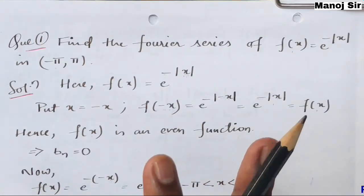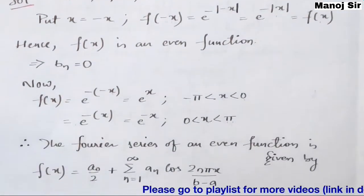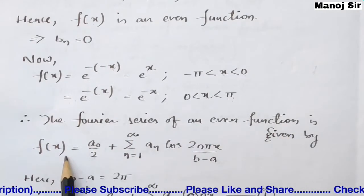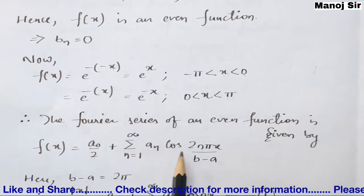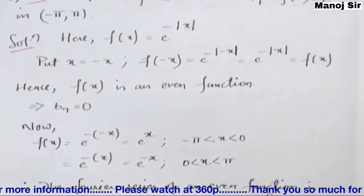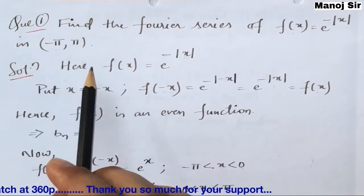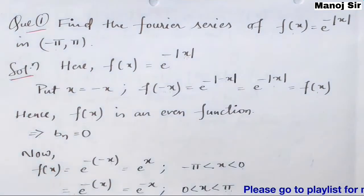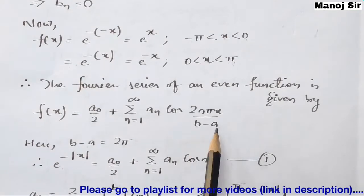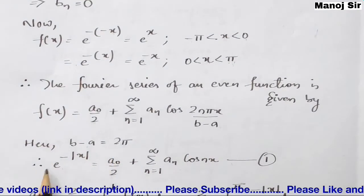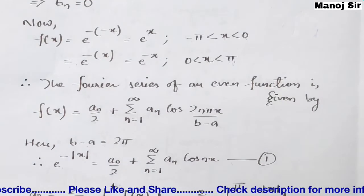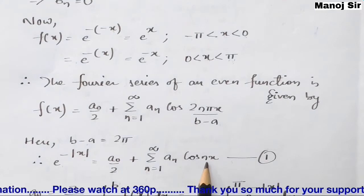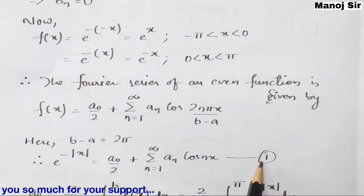It means we need to find only two values: a₀ and aₙ, because both are contained in the Fourier series. The Fourier series of an even function is f(x) = a₀/2 + Σ(n=1 to ∞) aₙ cos(2nπx / (b−a)). Here b−a = π − (−π) = 2π. Substituting, the 2π cancels and we get: e^(−|x|) = a₀/2 + Σ aₙ cos(nx). This is equation (1).